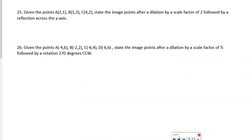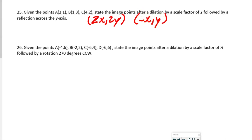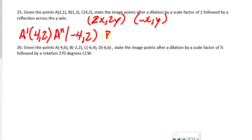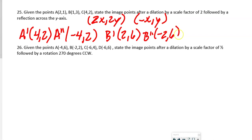Given points A, B, C, find image points after a dilation by scale factor 2 followed by a reflection across the y-axis. Rules: dilation gives (2x, 2y); reflection over y-axis gives (−x, y). So A prime = (4, 2), A double prime = (−4, 2). B prime = (2, 6), B double prime = (−2, 6). C prime = (8, 4), C double prime = (−8, 4).